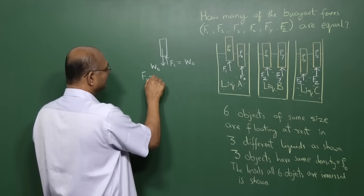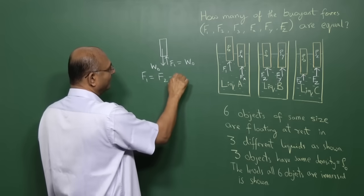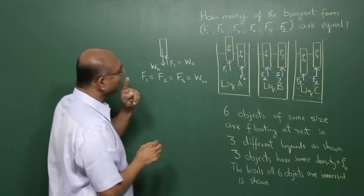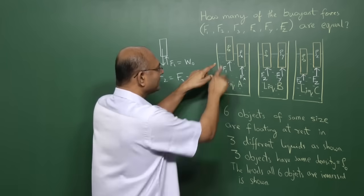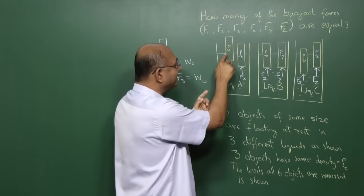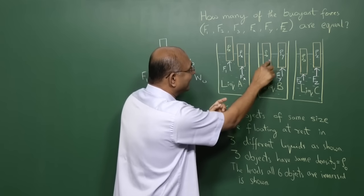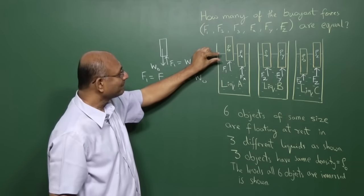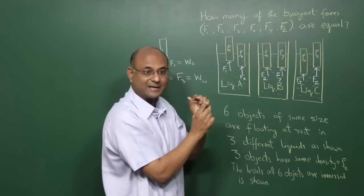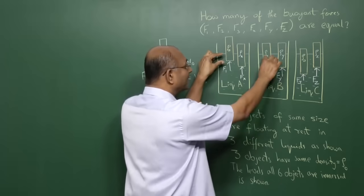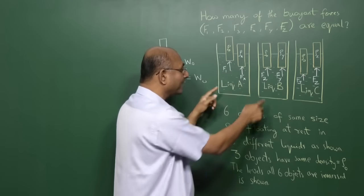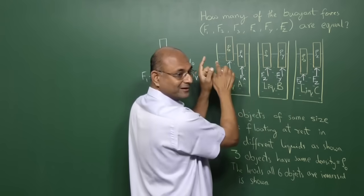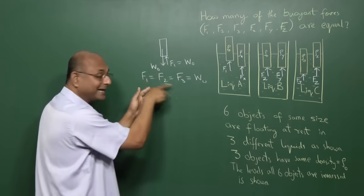So clearly F1 must be equal to F2, must be equal to F3, because it must be equal to the weight of the object. Now we might argue: isn't buoyant force the weight of the liquid displaced, and here the liquid seems to be less, there it is more? But remember, they are different liquids. Because they are different liquids, though the volume of this liquid is more than the volume of that liquid, the weight of this liquid and weight of that liquid you can't compare because liquid B and liquid A are not the same.